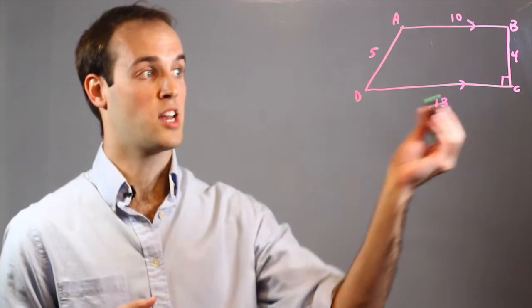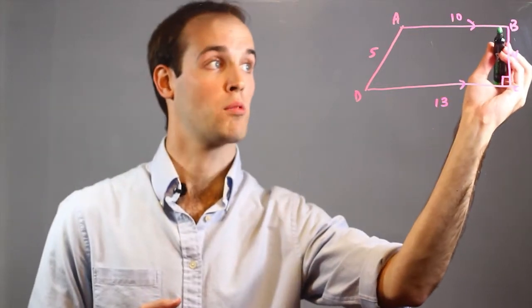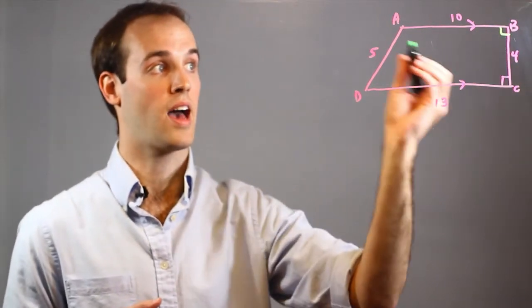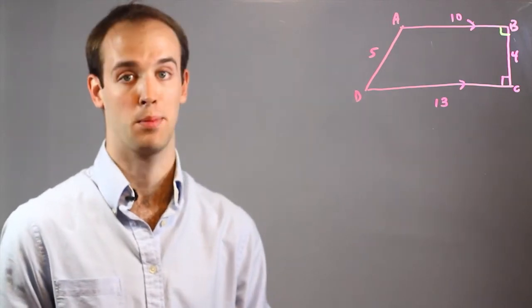Now, because I know that angle C is a right angle, I know that angle B must also be a right angle because I have two sets of parallel lines and these two angles must be supplementary.